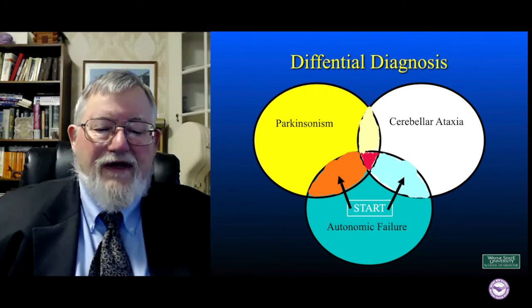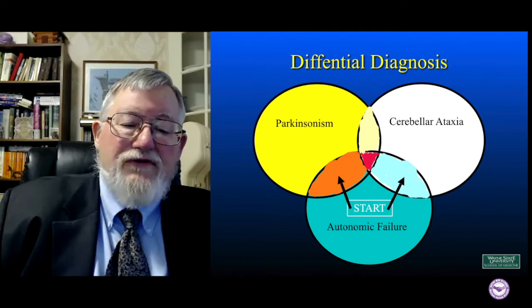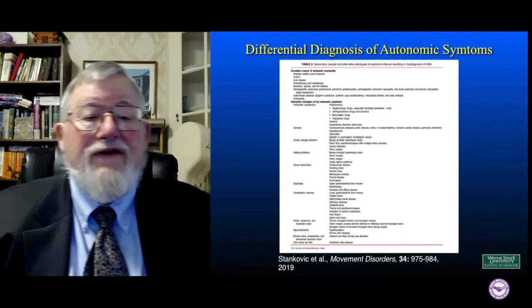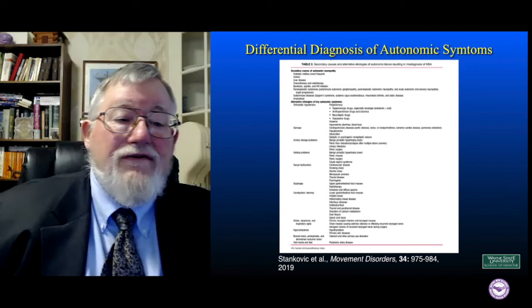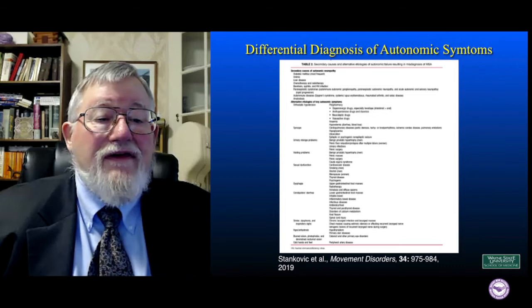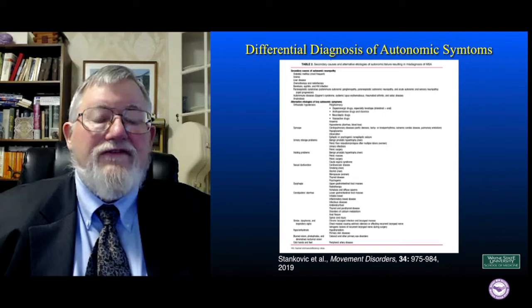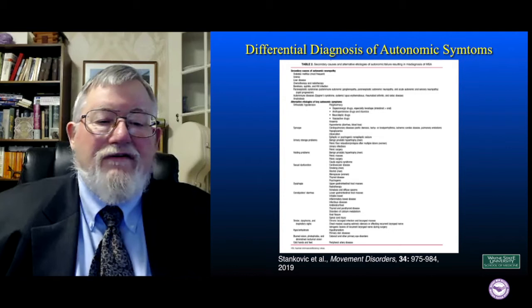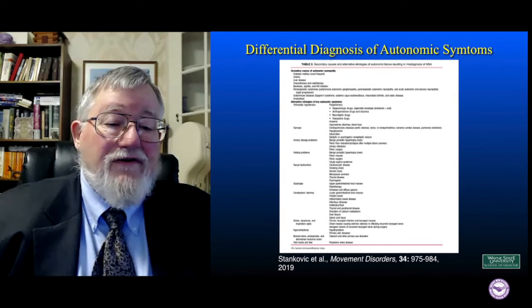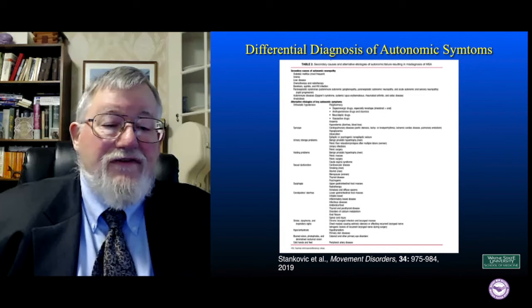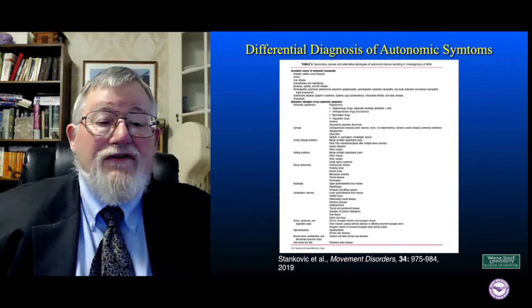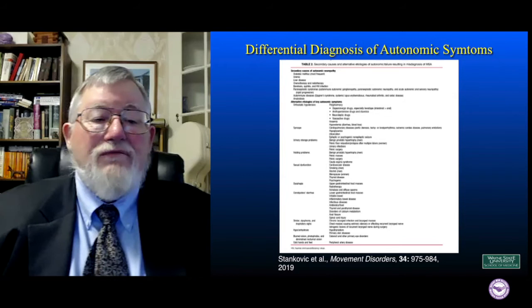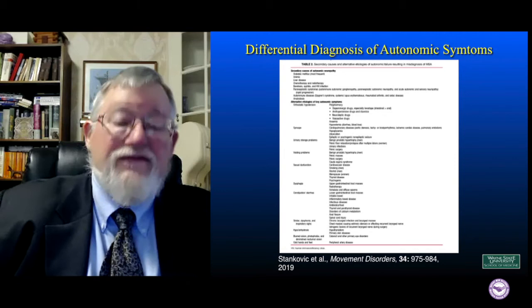If you're still in the purely autonomic failure circle, here is the list of differential diagnoses for autonomic symptoms. At the top, there's a fairly short list of about eight items that can cause autonomic neuropathy — diabetes heads that list. But then the rest of the slide lists different symptoms that can be due to autonomic failure, each with their own differential list of diseases that might cause those symptoms even without autonomic failure. So when you put this whole list together, you get a fairly large list of possible diseases to work through.